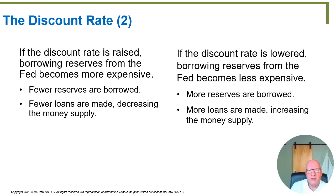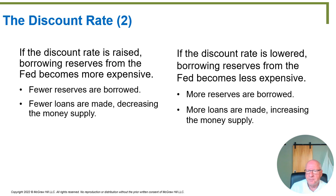There are two distinct markets: the discount loan market, where the Fed lends directly to banks, and the federal funds market, where banks lend to each other. Now, what happens if the Federal Reserve raises the discount rate? Banks are discouraged from borrowing because no one wants to pay extra for anything. Banks cut back on the amount they borrow, meaning fewer reserves are available, fewer loans are made, and that decreases the money supply.